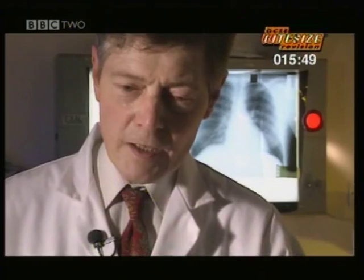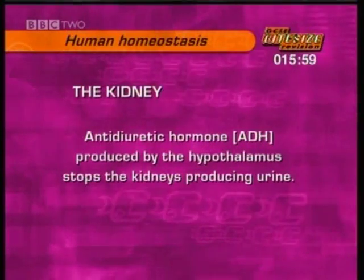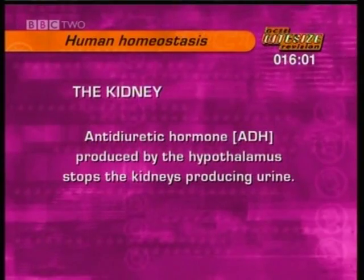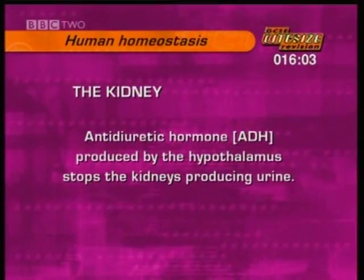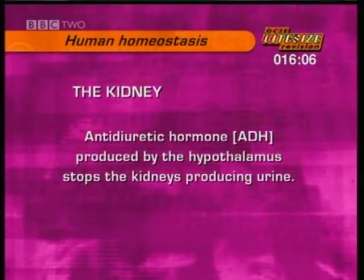Another day, you may be drinking a lot of fluid and the brain says: okay, kidney, pass plenty of water. And it says that not by sending a nervous message but by sending a hormone into the bloodstream. The kidney senses that and reacts. So it's the anti-diuretic hormone, or ADH, produced by the hypothalamus, which stops your kidney producing urine.